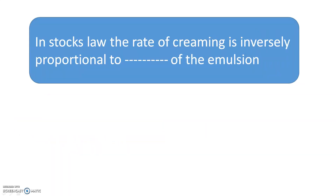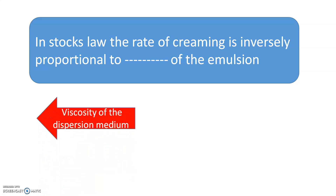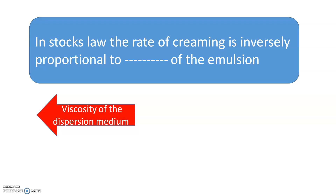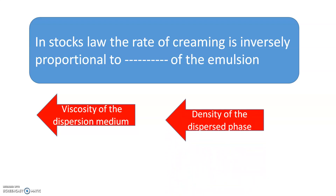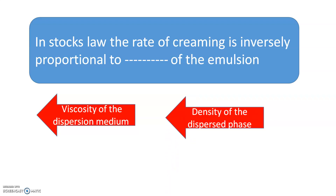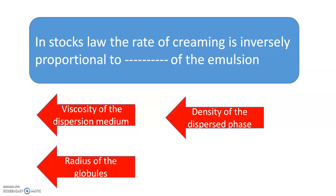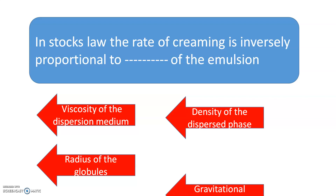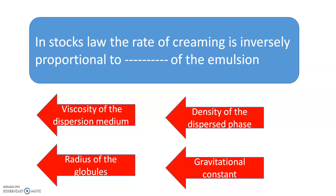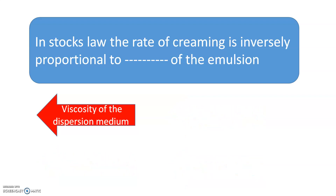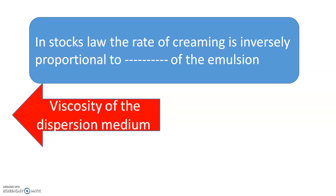In Stokes law, the rate of creaming is inversely proportional to which property of the emulsion? The answer is the viscosity of the dispersion medium. The higher the viscosity, the less the rate of creaming will be.